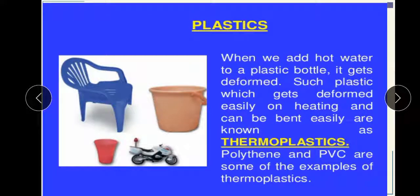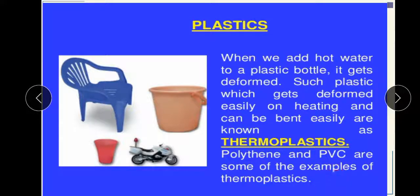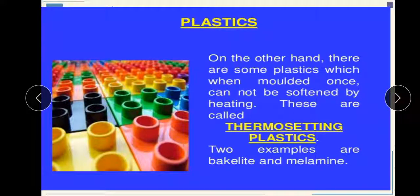When we add hot water to a plastic bottle, it gets deformed. Such plastics which get deformed easily on heating and can be bent easily are known as thermoplastics — thermo means temperature. Polyethylene and PVC are some examples of thermoplastics. On the other hand, there are some plastics which, when molded once, cannot be softened by heating. These are called thermosetting plastics — like our cooker's handle. For example, bakelite and melamine.